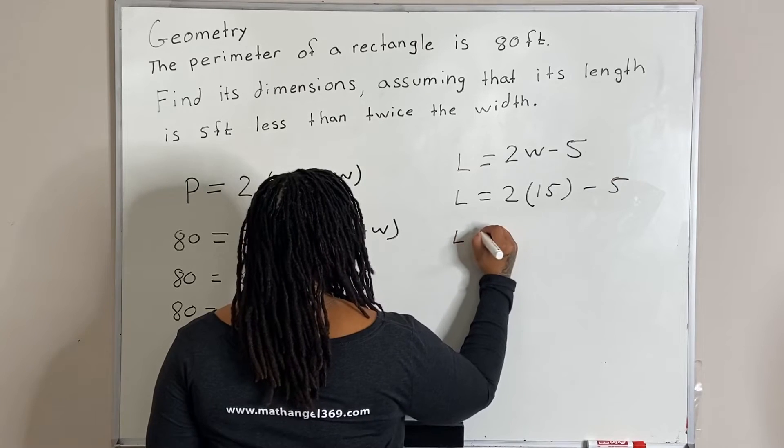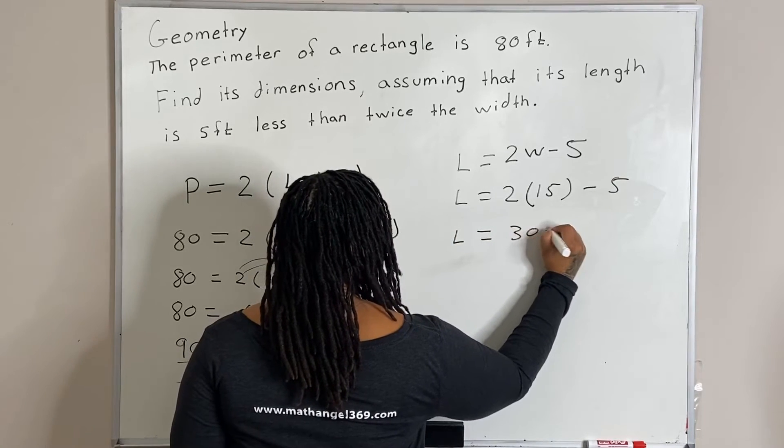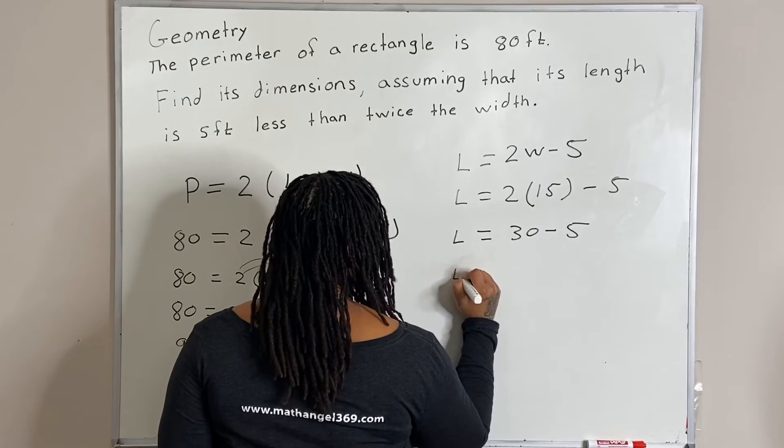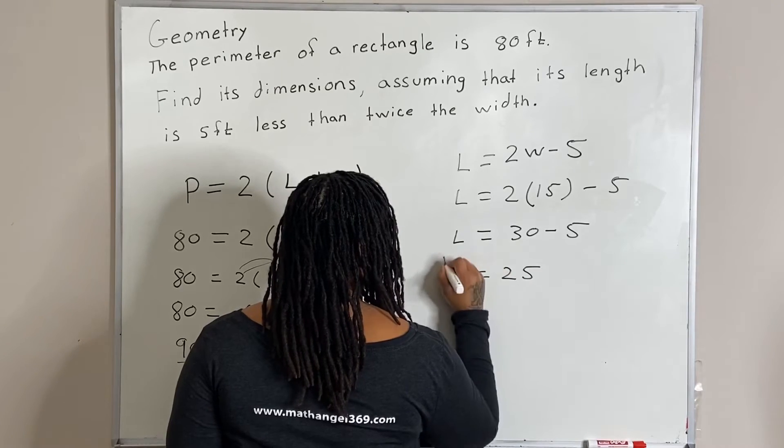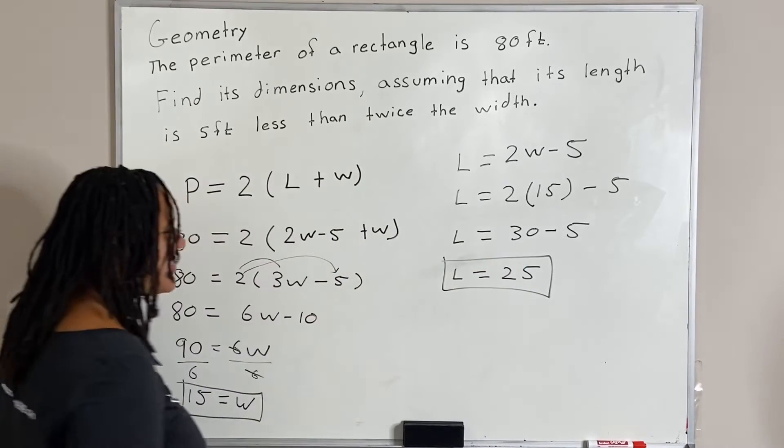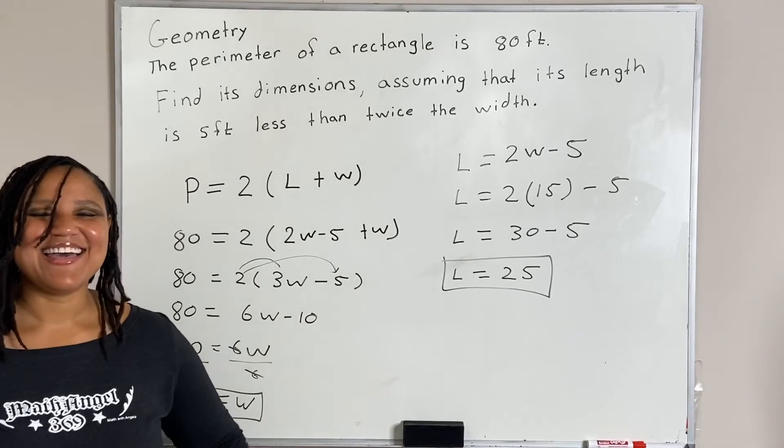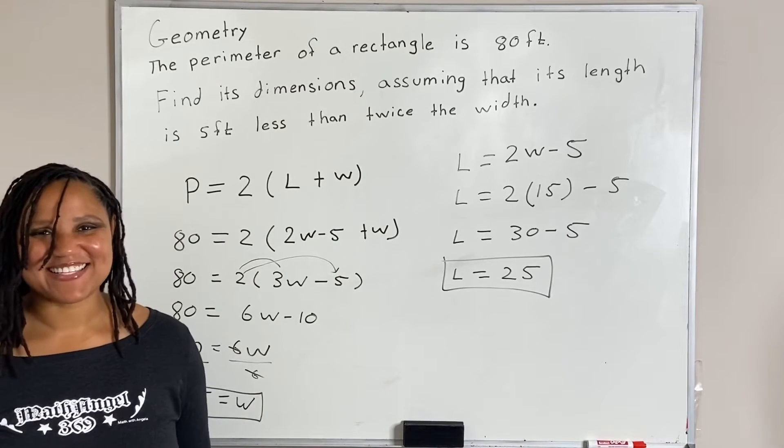Which means that L is equal to 30 minus 5, which means that L is equal to 25. So that is how you find the dimensions of a rectangle.